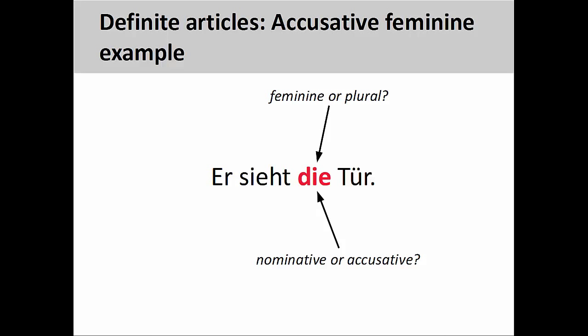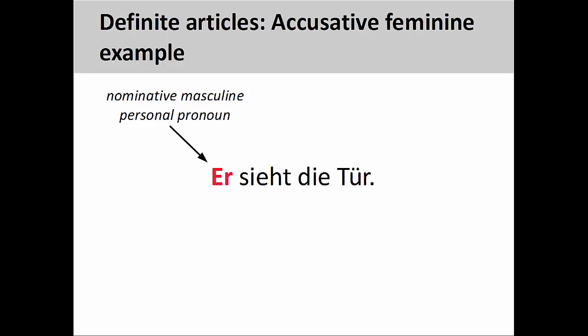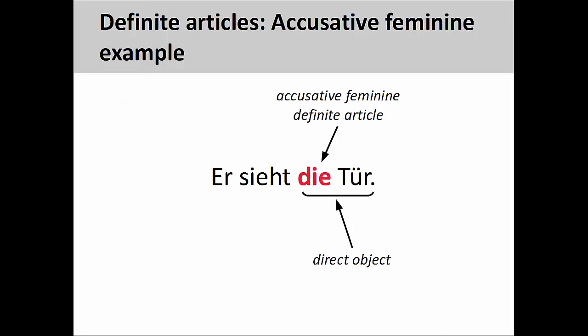For example, the sentence you see on the screen: er sieht die Tür — he sees the door. The feminine definite article Die, which is in the accusative case, looks very similar to the nominative form as well as to the plural nominative and accusative forms. In this case, the masculine personal pronoun er is in the nominative case and must function as the subject, so the noun Tür receives the action of being seen and is the direct object. Die most likely is a feminine definite article in the accusative case.